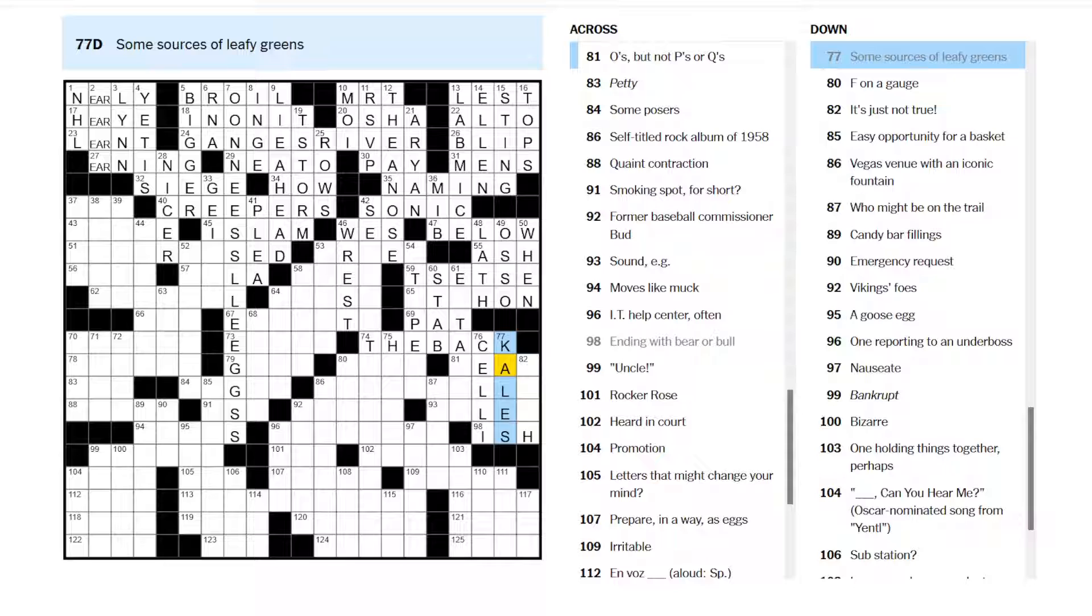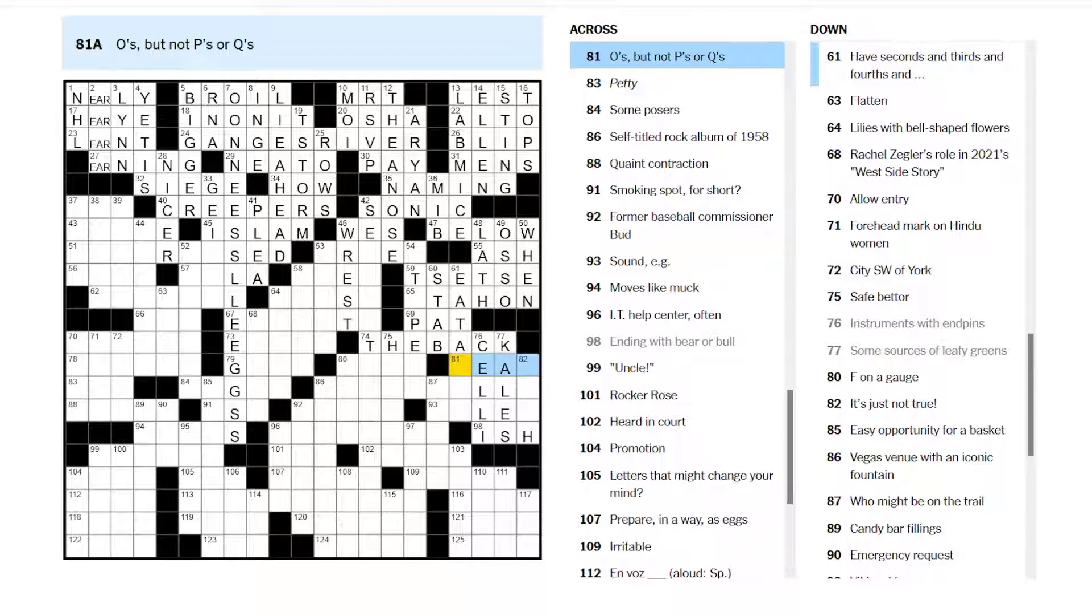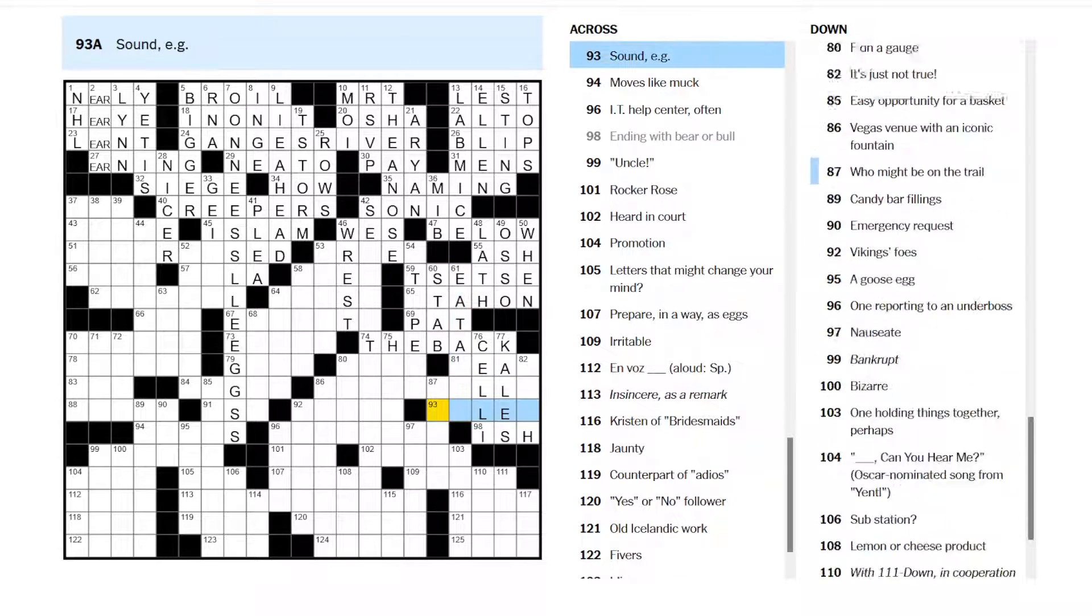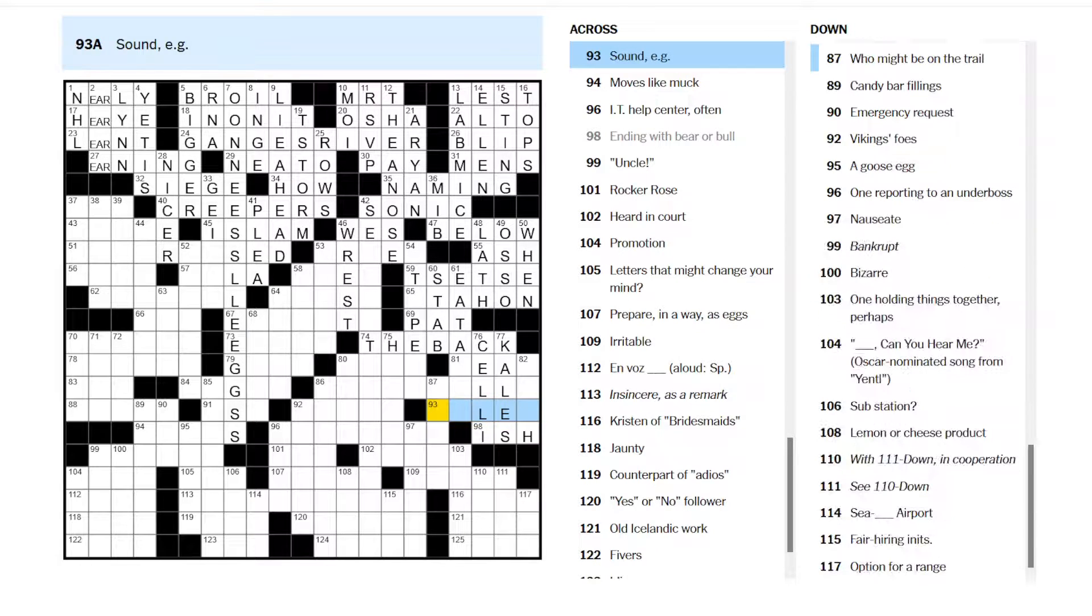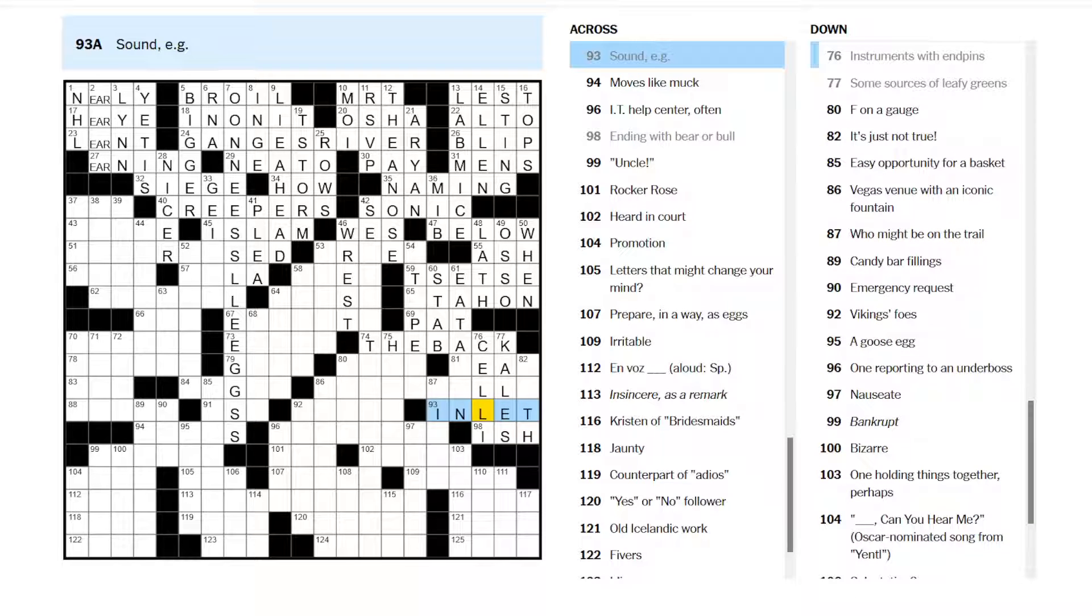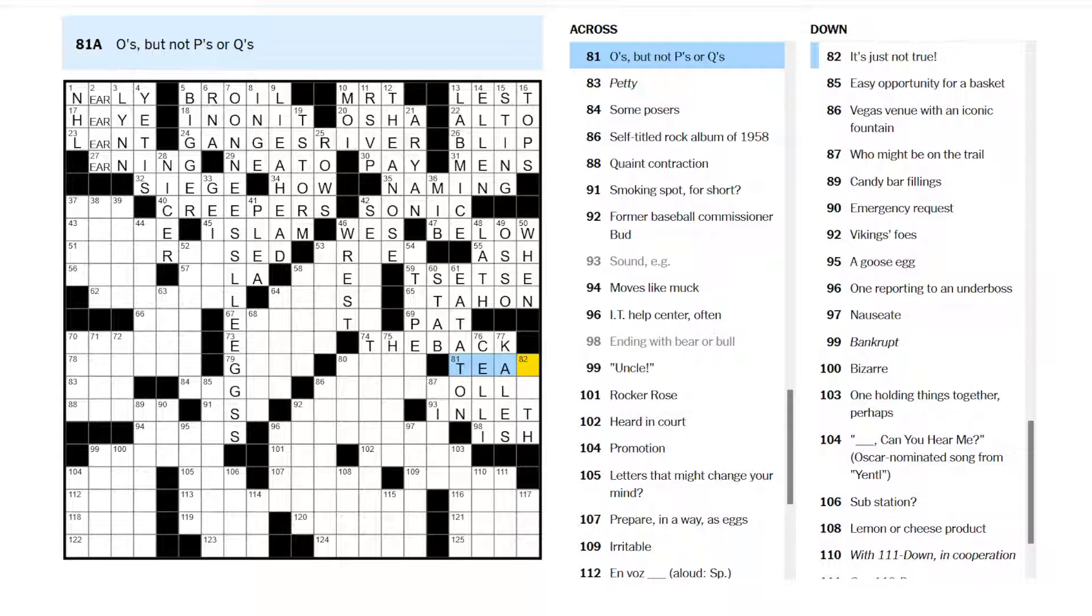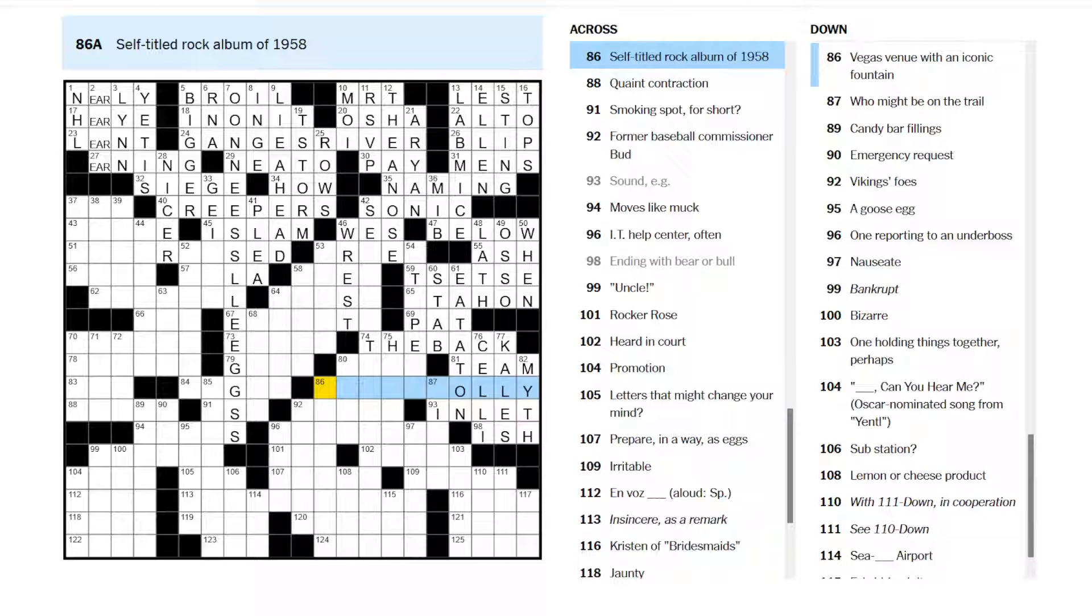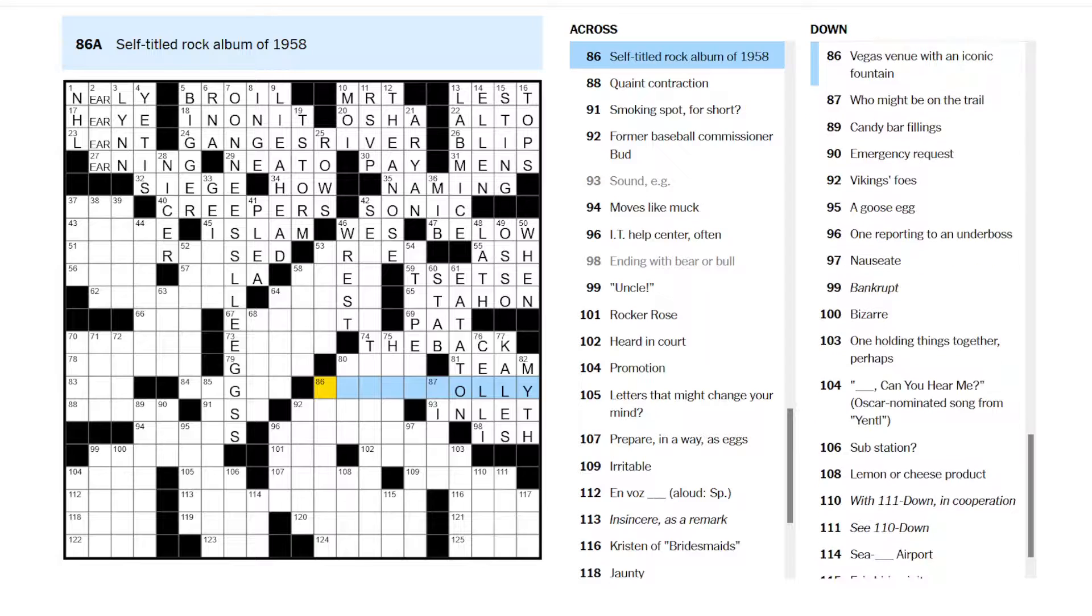Kales. Maybe that's an unusual word to see pluralized like that. Eat a ton or something. Eat a lot. Sound. An inlet. Could be like a body of water. As in the Puget sound. So eat a ton, it looks like. O's, but not P's or Q's. Is there a team called the O's? It's just not true. It's a myth. Self-titled rock album. Buddy Holly. There we go.